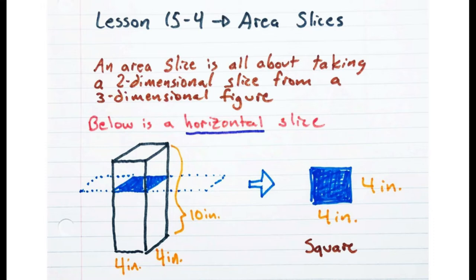We will start with horizontal slices. An area slice is all about taking a two-dimensional slice from a three-dimensional figure. Here we have a rectangular prism being chopped in half side to side — horizontal means side to side. Think of the horizon: if you look at the sunrise, the landscape always goes side to side in your vision. A horizontal slice is going to go from one side of a shape to the other, and then we want to look at what shape will result from that. So if we chopped this rectangular prism from side to side, what would happen?